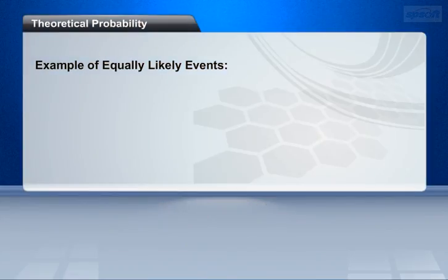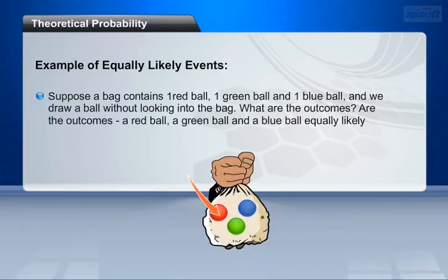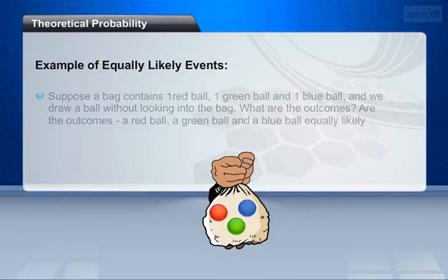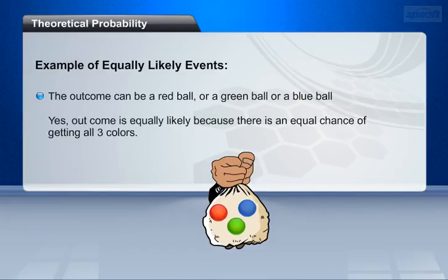Let's discuss an example of equally likely events. Suppose a bag contains 1 red ball, 1 green ball, and 1 blue ball, and we draw a ball without looking into the bag. The outcomes can be a red ball, a green ball, or a blue ball. Yes, the outcomes are equally likely because there is an equal chance of getting all 3 colors.